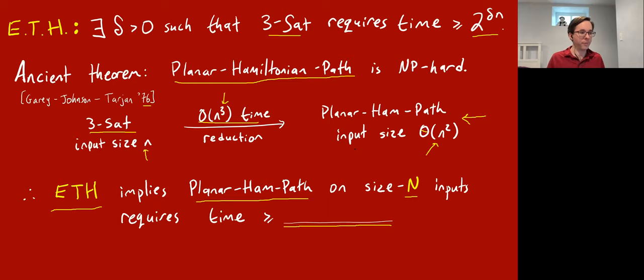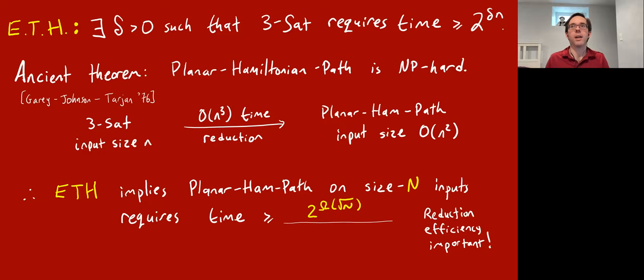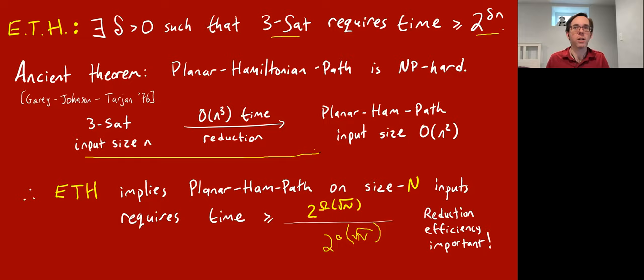We got the correct answer in the chat: it's 2^(Ω(√N)) time. Just to talk you through it — imagine conversely that you could solve planar Hamiltonian path in 2^(o(√N)) time. Then you would contradict ETH — you would solve 3-SAT in better than exponential time. Given a 3-SAT instance, stage one you run this reduction. The fact that it's n-cubed time is no problem at all, since you're shooting to solve the 3-SAT instance in 2^(o(n)) time. You do get a planar graph of size n-squared, and then your hypothetical planar Hamiltonian path algorithm runs in time better than 2^(√N) = 2^(o(n)). That contradicts ETH.